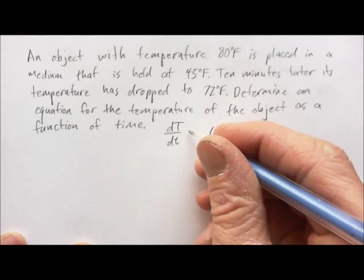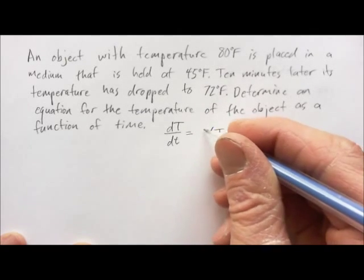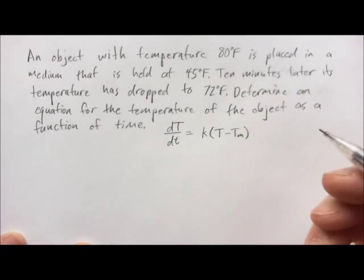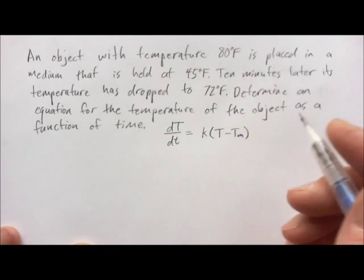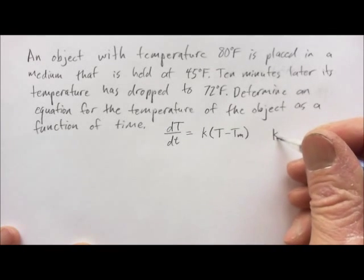To say that it's proportional to that difference means that it's equal to some constant times it. And what we're going to do for convenience is we're going to decide that we want K to be greater than zero.